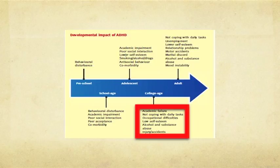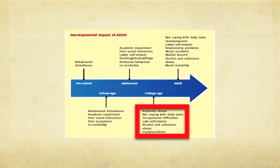For college-age students, a significant issue is academic failure — even in kids who are incredibly bright and capable — because they're struggling to cope with daily tasks and activities on their own. You go away to college, suddenly you're completely on your own: you get up when you feel like it, you go to class if you want, nobody's taking attendance. They have to manage things in their environment that they may have had more support for earlier in life. We also see the beginning of occupational difficulties, low self-esteem, alcohol and substance use to cope with symptoms, and an increase in injuries, accidents, and emergency room appearances.